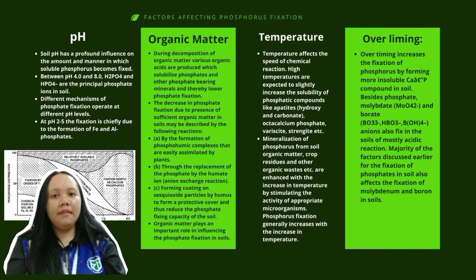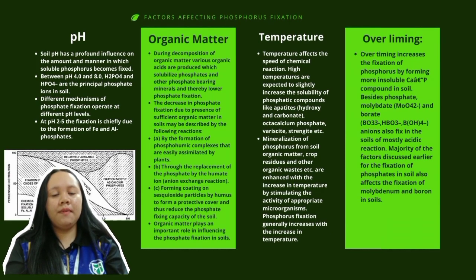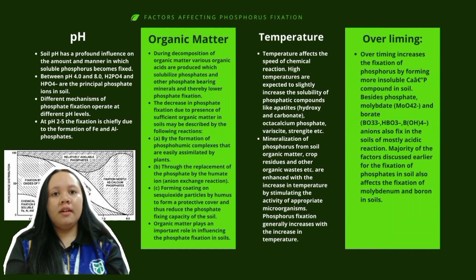Next are the factors affecting phosphorus availability. Soil pH has a profound influence on the amount and manner in which soluble phosphorus becomes fixed. Above pH 9, PO4³⁻ dominates but H2PO4⁻ is still present.